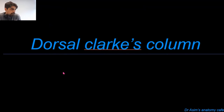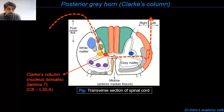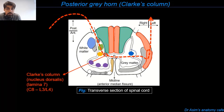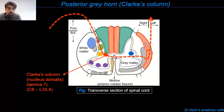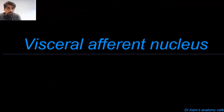Now let's discuss Clark's column, also known as the dorsal nucleus of Clark. Neurons bringing in proprioceptive information from muscle spindles travel through the spinal nerve and posterior root to enter the posterior gray horn, where they synapse with neuronal cell bodies inside the nucleus dorsalis — Clark's column. This proprioceptive information is then carried up to higher brain centers such as the cerebellum via the spinal cerebellar pathways, which are color coded in red. There are two such pathways: the anterior and posterior spinal cerebellar tracts.